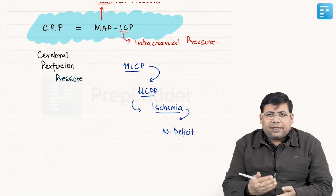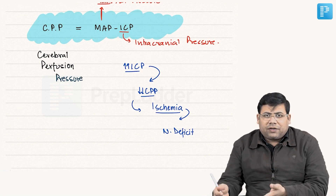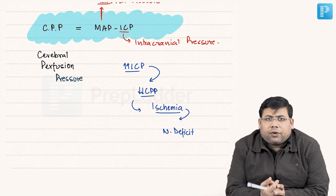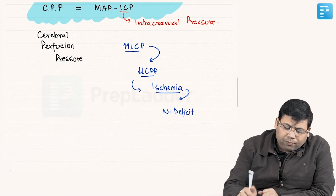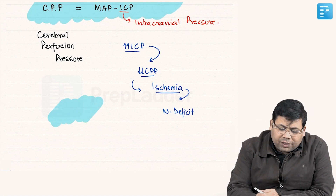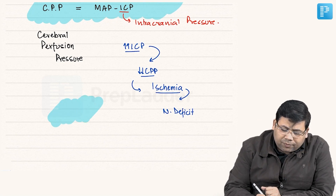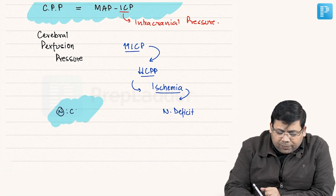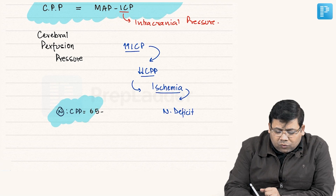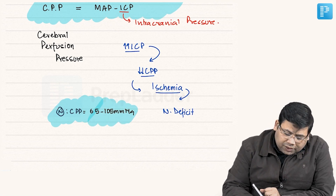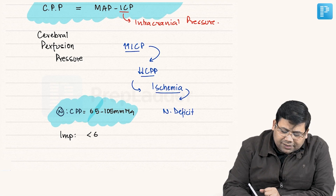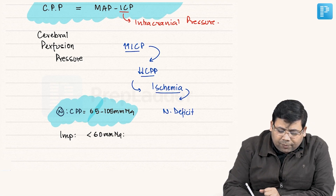Always remember this relation in exams — if systolic BP, diastolic BP, or intracranial pressure is given, you can calculate CPP using this equation. This is very important. The normal cerebral perfusion pressure is 65 to 105 mmHg, and less than 60 mmHg is considered a critical value.